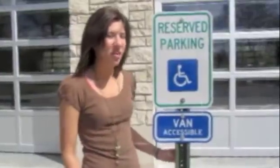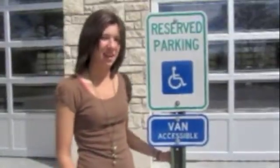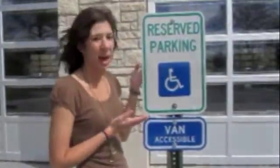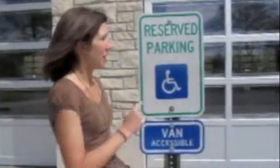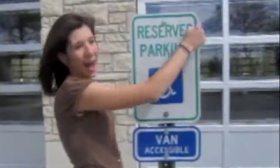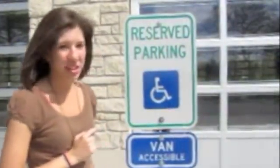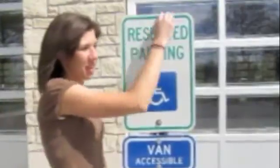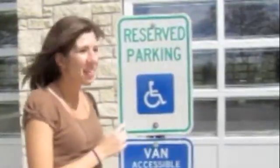The perimeter is the distance around the outside of a shape. Let's take this handicapped parking sign for example. To find the perimeter, we would want to find the distance to go all the way around the outside of the rectangle. What you can do is figure out the distance for each side and then add them all up and you'll end up with your perimeter.